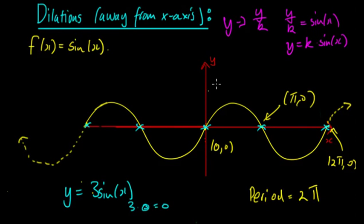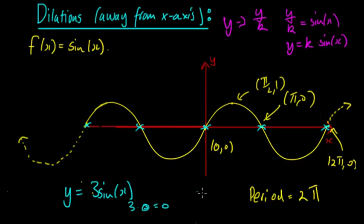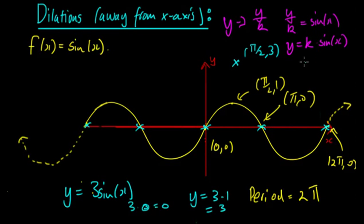What about this point here? Previously this point was (π/2, 1), and this was a maximum. So it's still going to be a maximum with this graph. When you have sin(π/2), that is a maximum and equals 1. So we substitute that in and find y = 3 times 1, which is equal to 3. Because sin(π/2) is 1, 3 times 1 equals 3. So now we have a point at (π/2, 3), and at every other maximum we're going to hit 3.